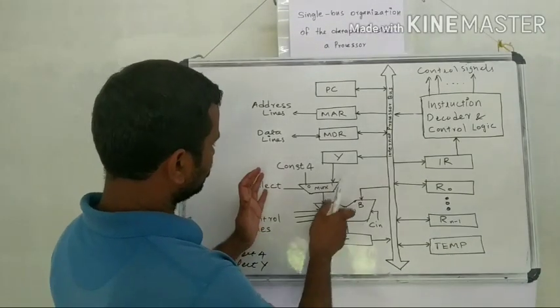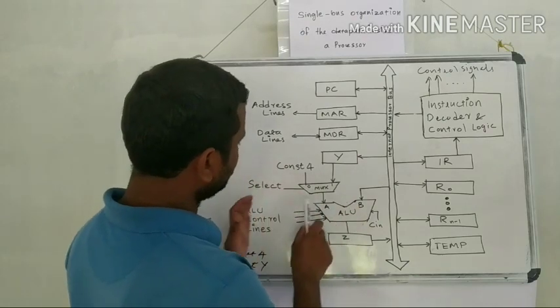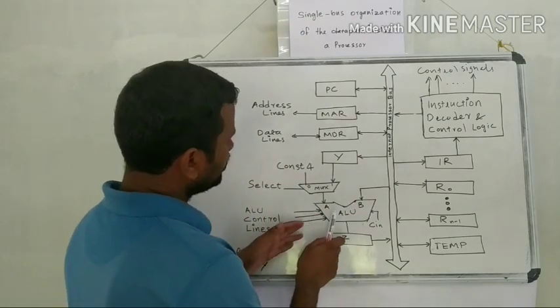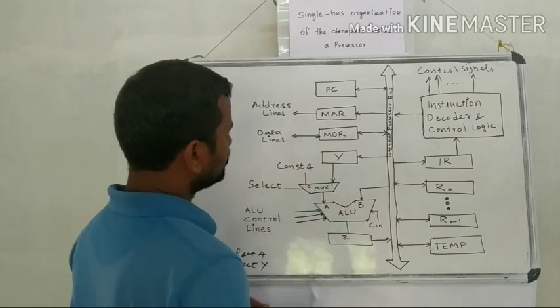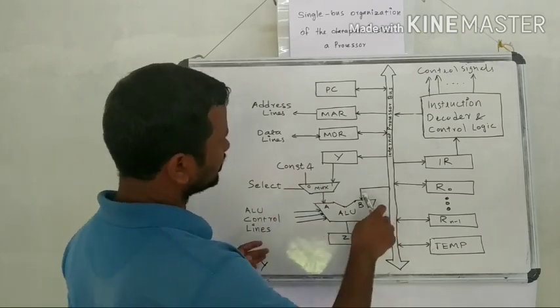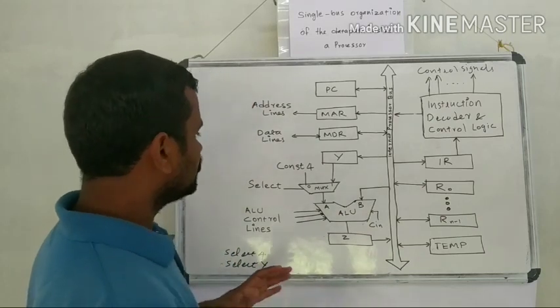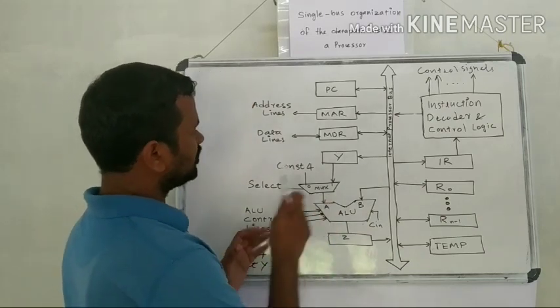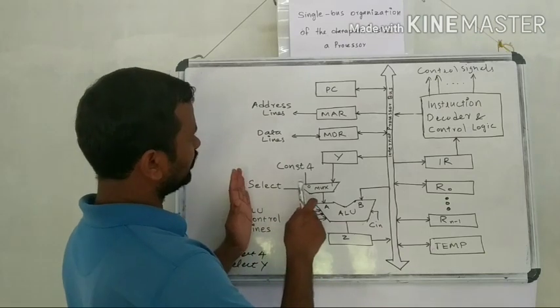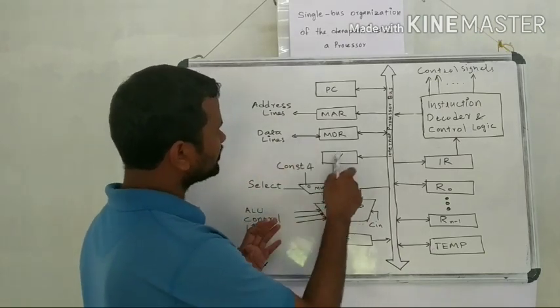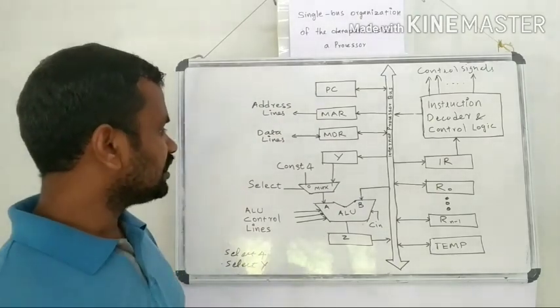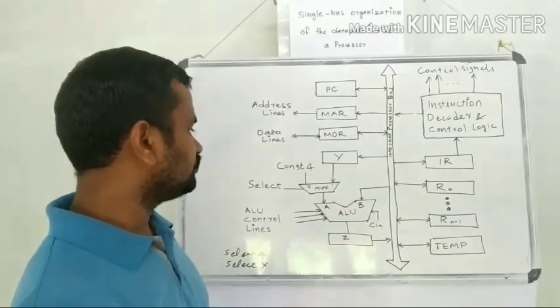Then another component is a multiplexor. This A input of the ALU is connected through the multiplexor. This B input is directly connected to the internal processor bus. And the A input is connected through the multiplexor. That is, we can give either constant 4 or the Y register content to the ALU A input.